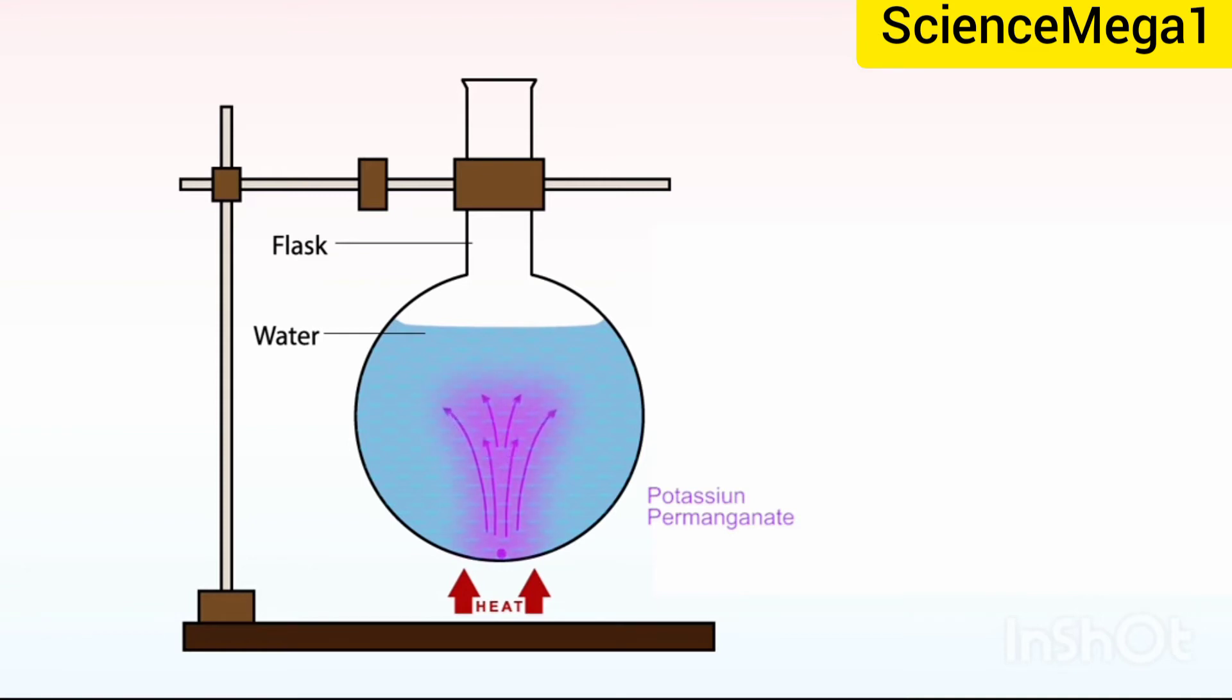Heat transfer by conduction involves the transfer of energy from molecule to molecule. Energy moves, but the molecules do not move. However, in convection, the molecules move throughout the volume of the fluid, carrying the heat energy with them. So you now see the difference between conduction and convection.